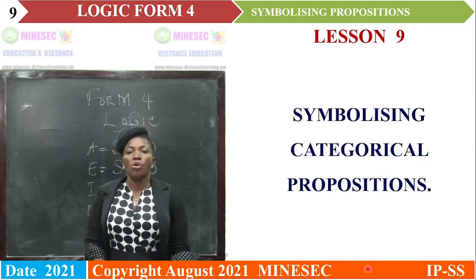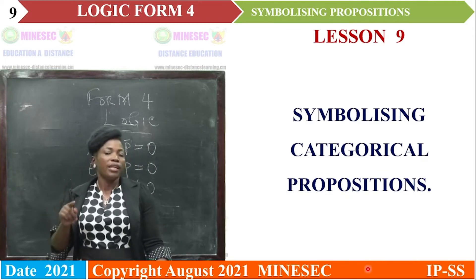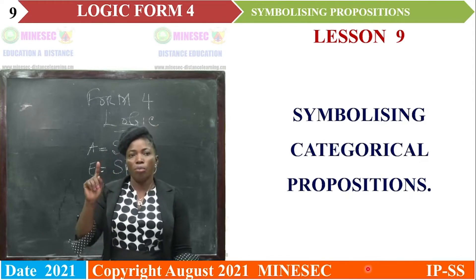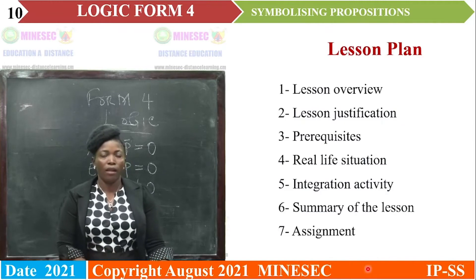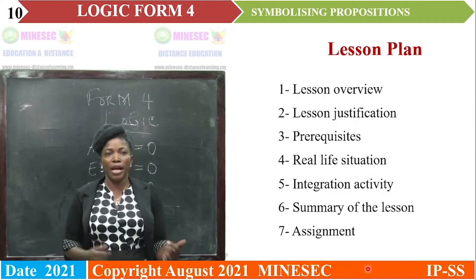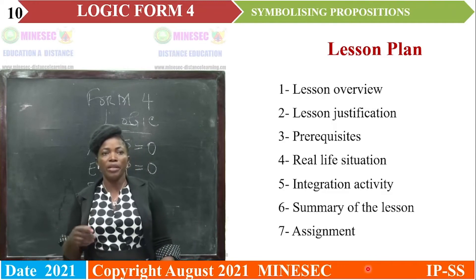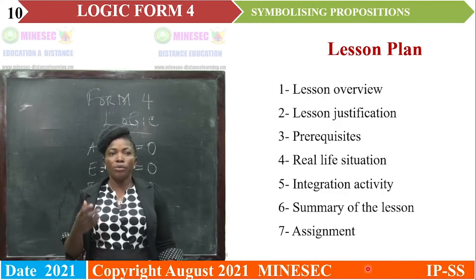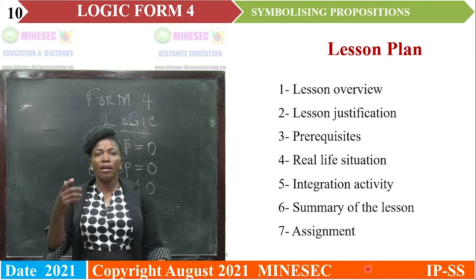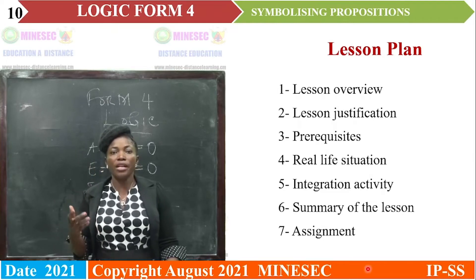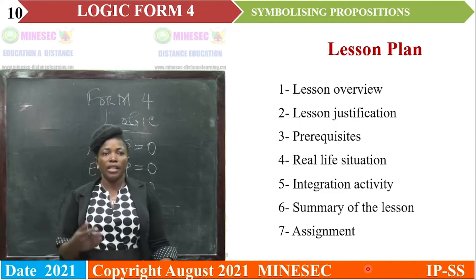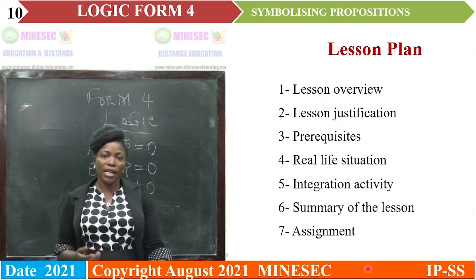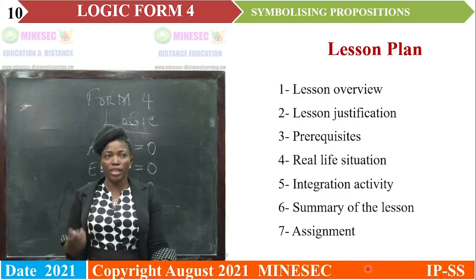Our lesson for today is based on symbolizing categorical propositions — symbolizing the A, E, I, and O propositions. Before we start our lesson, let us have a plan: a lesson plan. We will begin with a lesson overview, then lesson justification, then prerequisites from our previous knowledge, then a real-life situation, then an integration activity, then a summary, and finally an assignment to better assimilate the next lesson.